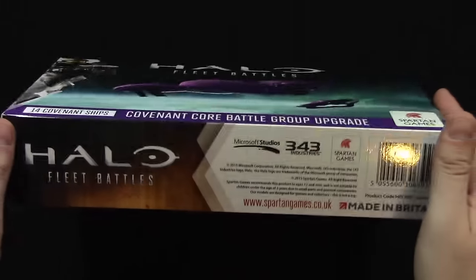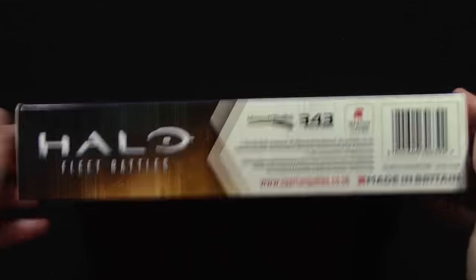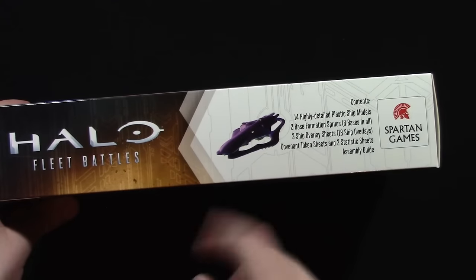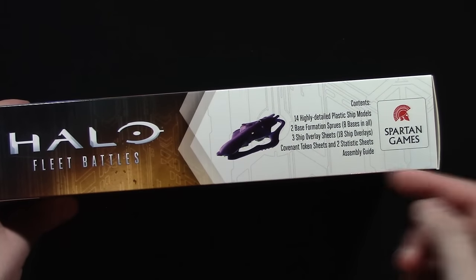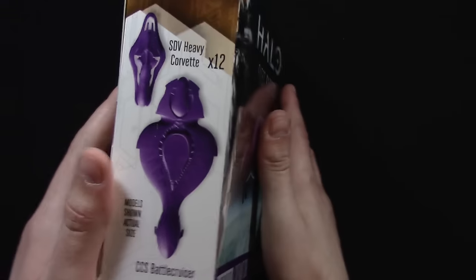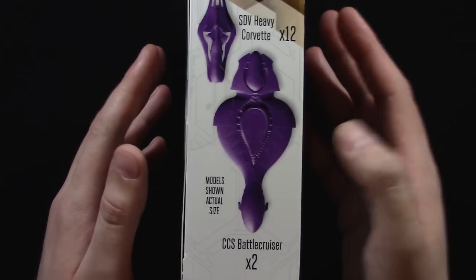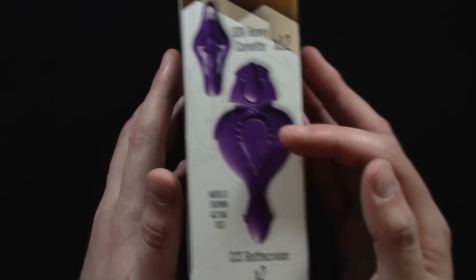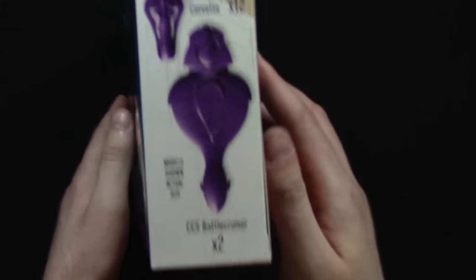So okay, that's the front of the box. On the side you've got the usual logos and stuff. On the top of the box you've got a heavy Corvette, an STV Corvette and it tells you what you get in the box. And on the side you've got the ship showing actual size as always. So you've got 12 STV Heavy Corvettes and two CCS Battlecruisers in the box. The other side is the same thing.